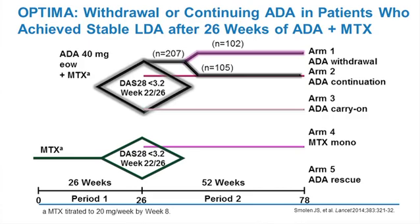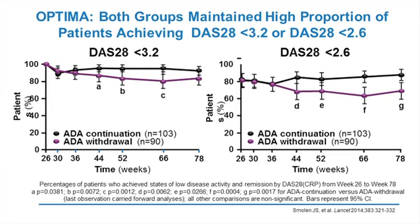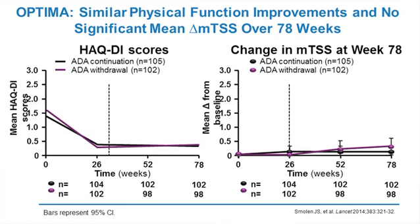Data from OPTIMA showed that patients who achieved remission or low disease activity early — when followed for 18 months after six months of therapy — showed very little change in their DAS and, importantly, no changes in their function. So patients after remission induction did extraordinarily well. We do not know what would happen if all such patients stopped therapy, and stopping studies are informative here.